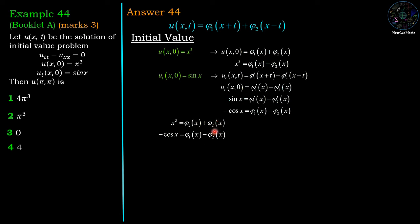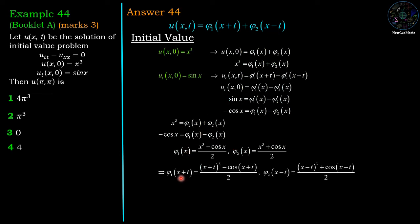Using these two equations — x³ equals φ₁(x) plus φ₂(x), and minus cos(x) equals φ₁(x) minus φ₂(x) — we can find φ₁ and φ₂. So φ₁(x) equals (x³ minus cos x) divided by 2, and φ₂(x) equals (x³ plus cos x) divided by 2. Since φ₁ is a function of x + t and φ₂ is a function of x − t, we substitute: φ₁(x + t) equals ((x+t)³ minus cos(x+t)) over 2, and φ₂(x − t) equals ((x−t)³ plus cos(x−t)) over 2.